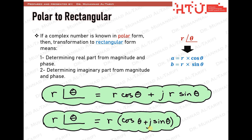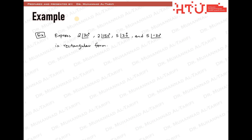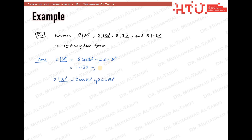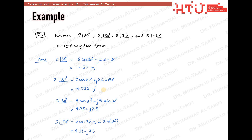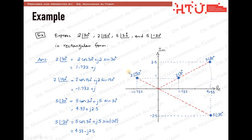Let's do a simple example. We have four complex numbers in polar form and wish to find their rectangular forms. For 2 at the phase of 30 degrees, the real part is 2 cosine 30 degrees and the imaginary part is 2 sine 30 degrees, which evaluates to 1.732 plus j. For 2 at the phase of 150 degrees, the process is just as simple, applying the same transformation. The same applies to the rest — no tricks at all, just straightforward application of the transformation. For completeness, here are the numbers plotted on the complex plane.